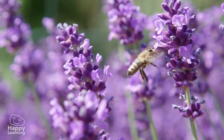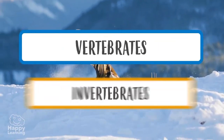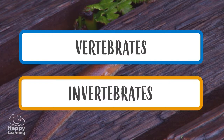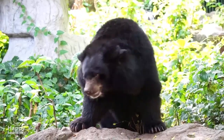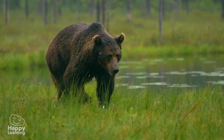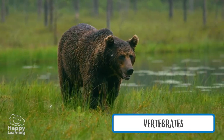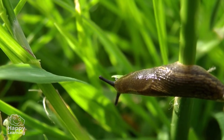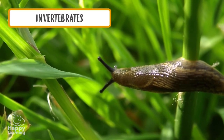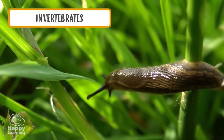Now let's see if we can distinguish which animals are vertebrates and which are invertebrates. Is this dancing bear a vertebrate or invertebrate? Of course, bears are vertebrate animals — they have bones and they are also mammals. What about this slug? Slugs are invertebrate animals. They are molluscs — they have no bones and are very soft.